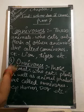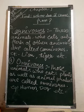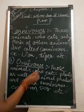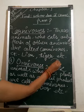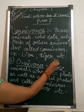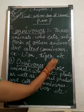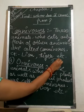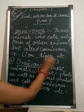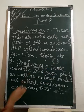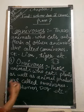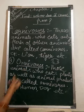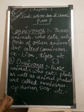Why do they eat only the flesh of animals? Because they have very sharp canine teeth. These canine teeth help for tearing food material, tearing the flesh of animals.